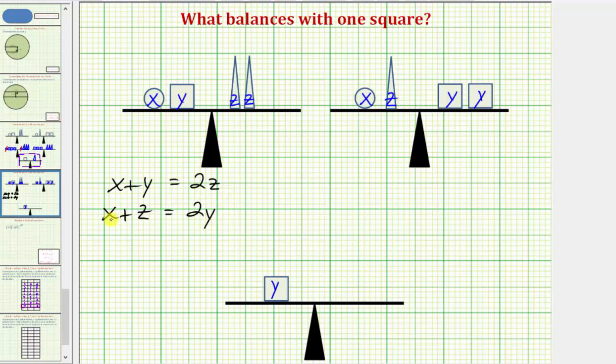So notice how we have a system of equations here. We have two equations with three unknowns. Our goal here is to determine what would balance with one square, or what y is equal to. So to solve the system of equations for y, let's solve these two equations for x, and then we'll perform substitution. Solving this first equation for x, we would subtract y on both sides, which would give us x equals 2z minus y.